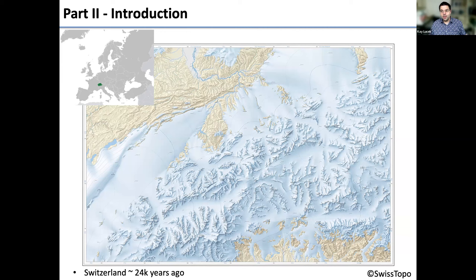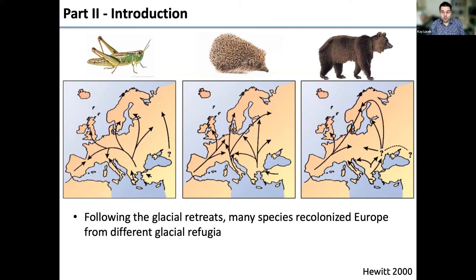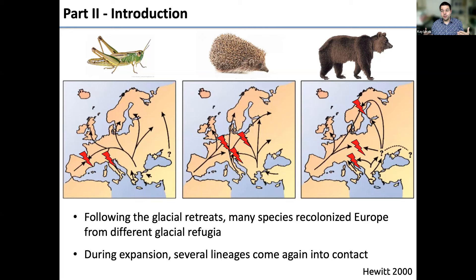This is a common phenomenon. A seminal paper highlights how, following glacial retreats, many species recolonized Europe from different glacial refugia — from crickets to butterflies to bears. The question is: what happens if those lineages come together? In different glacial refugia they diverged through time and accumulated different incompatibilities — essentially allopatric speciation. But if they didn't acquire enough reproductive barriers, what happens then?